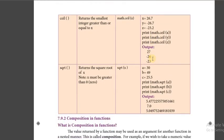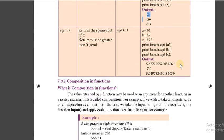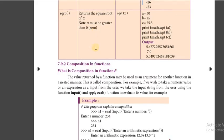Next is ceil — it returns the smallest integer greater than or equal to x. So for 26 with any decimal digit, it takes the next digit and displays that. We are all very familiar with the square root function — it displays the root value of the given number, but the important thing is the number must be greater than 0. All three functions — floor, ceil, and square root — require importing the math module.